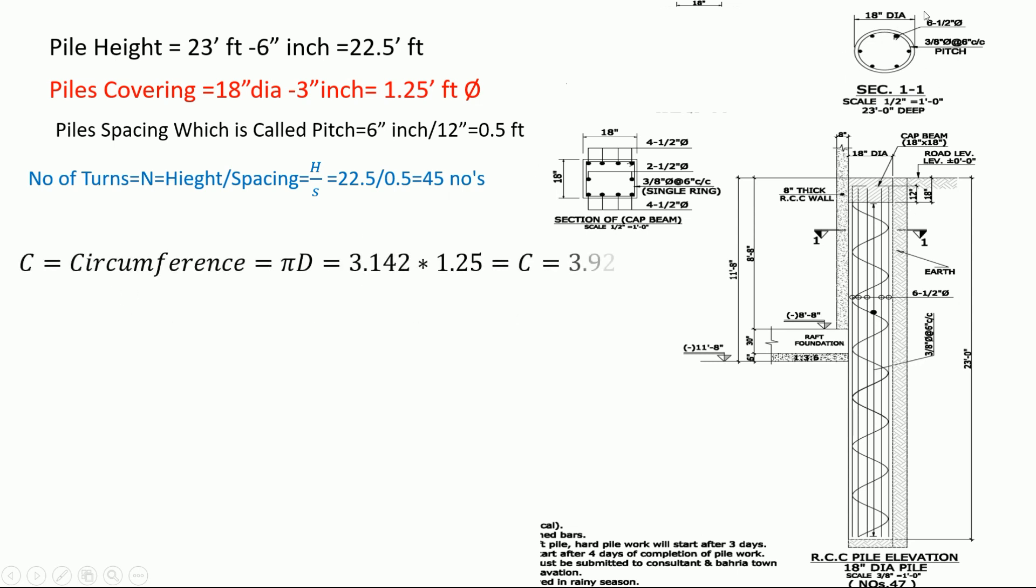Now we calculate diameter of the spiral bar. Circumference C equals π D. 3.142 is the pi value and 1.25 is the diameter. C equals 3.927, which is the circumference of the spiral bar.